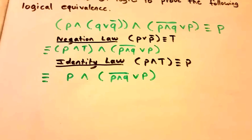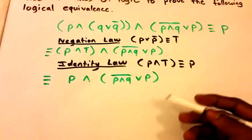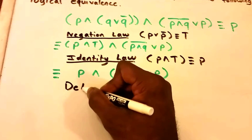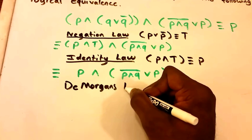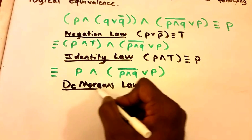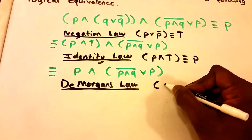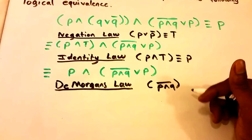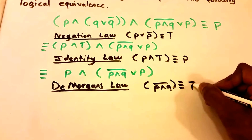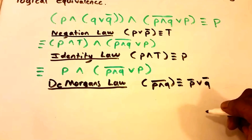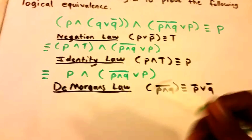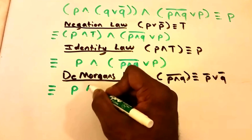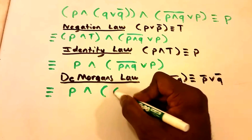We still haven't reduced it to P yet, so let's use another law — DeMorgan's Law. DeMorgan's Law states that ¬(P∧Q) is logically equivalent to ¬P∨¬Q. Rewriting our equation, we get: P ∧ (¬P∨¬Q) ∨ P.